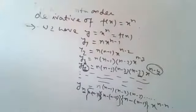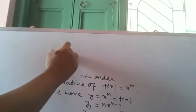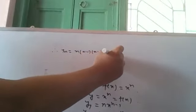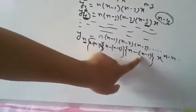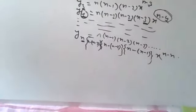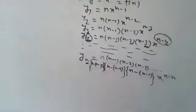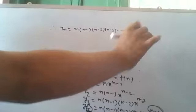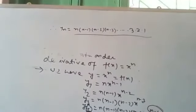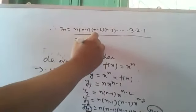So yn is equal to n(n−1)(n−2)(n−3)... down to 1, times x to the power (n−n). Since x to the power (n−n) equals x to the power 0, which equals 1, we do not write it. Looking at this product, we recognize it as factorial n. So the card formula here is: yn equals factorial n, written as n!.